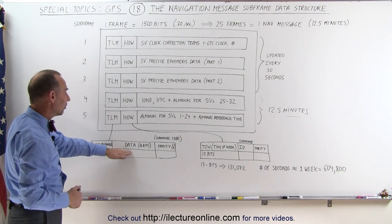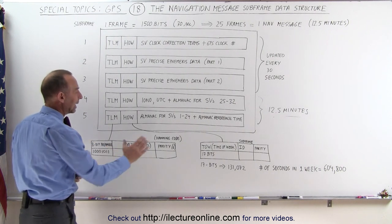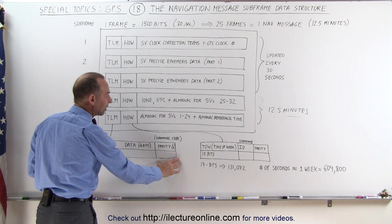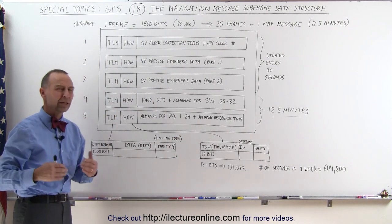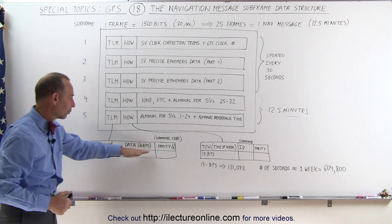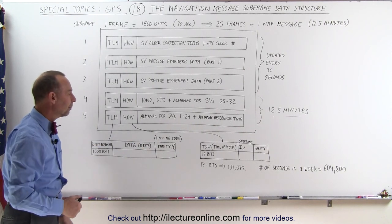We have 16 bits ready for the data here, and at the end of each word, we have a 6-bit parity region that contains the Hamming code, and we'll give you more information about the specifics, what's in the data here, and what's in the parity code.